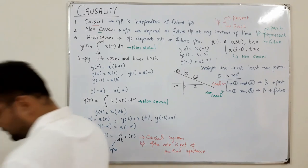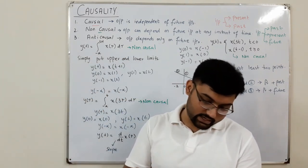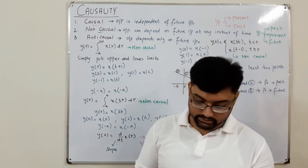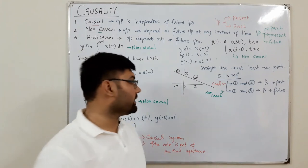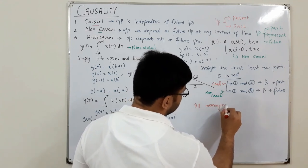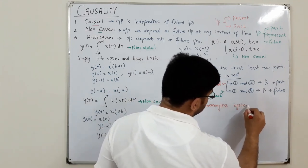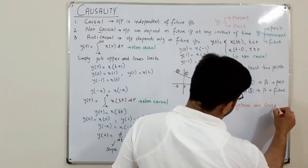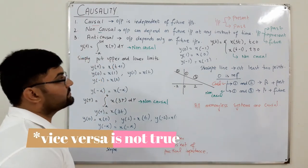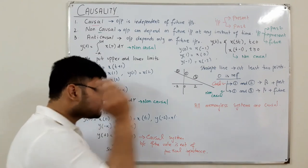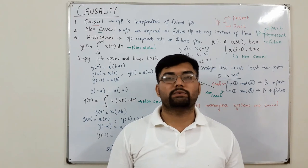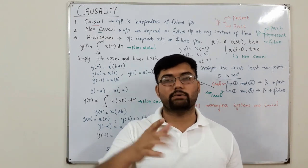One additional point: all memoryless systems are causal systems, because they depend only on the present value, which is consistent with the causal definition. That's all for today. In the next lecture we'll cover the property of stability. Take care, goodbye.